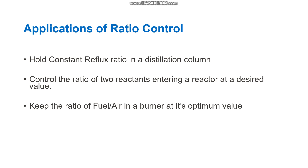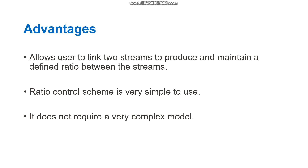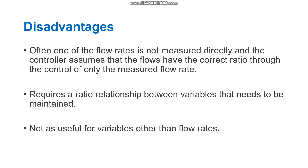The advantages of ratio control are that it allows the user to link two streams to produce and maintain a defined ratio between them. This scheme is very simple to use and does not require a very complex model. A disadvantage is that one of the flow rates may not be measured directly, and the controller assumes the flows have the correct ratio through control of only the measured flow. It also requires a ratio relationship between variables, and is not very useful for variables other than flow rates.